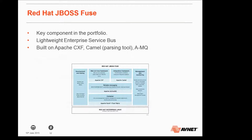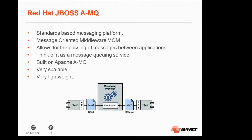Red Hat JBoss AMQ is a standards-based messaging platform, also known as MOM or message-oriented middleware, and it allows for the passing of messages between applications. Think of AMQ as a message queuing service. You might have two applications — Application A and Application B — where B is a lot slower than A. You stick AMQ in the middle; AMQ holds on to messages from Application A, queues them up, and delivers them to Application B when it's ready. It's very scalable, very lightweight, written in Java, so it can run on RHEL, Windows, or anything that can run Java.